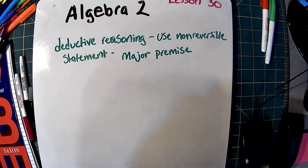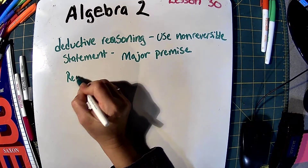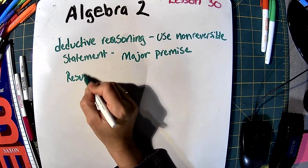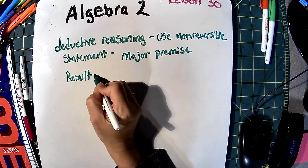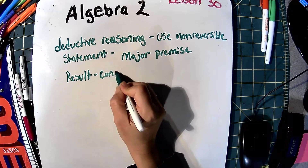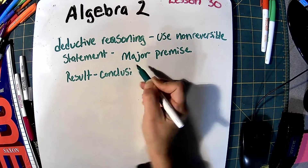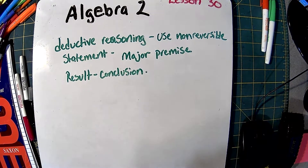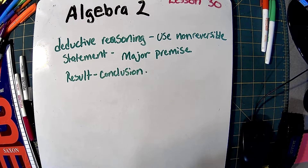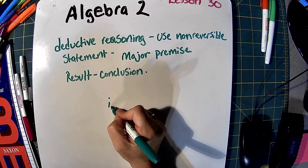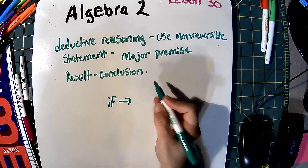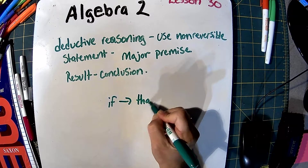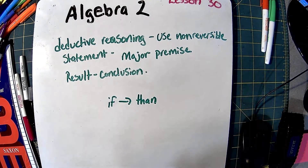When we get a result from that, our result is called a conclusion. So we use a major premise to get a conclusion. Major premises always are an if-then statement — if this, then that.